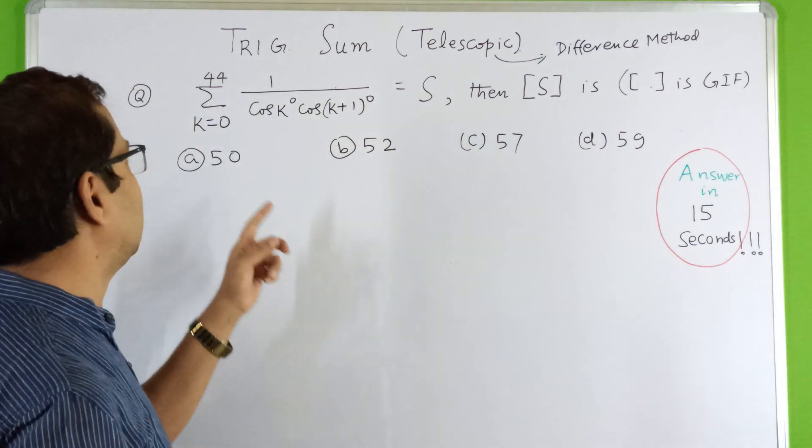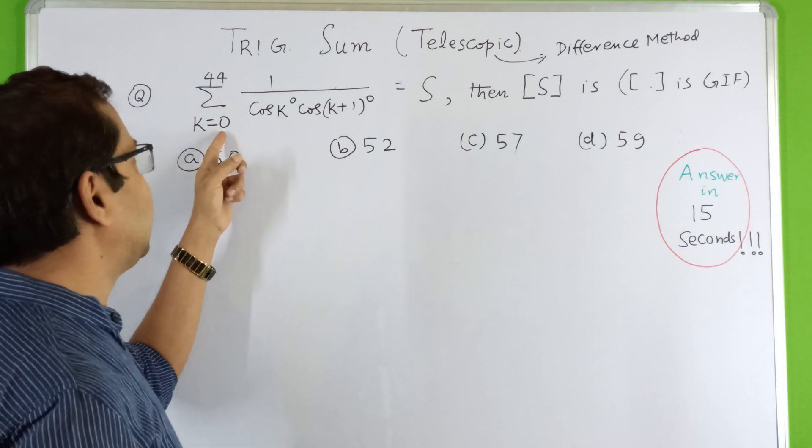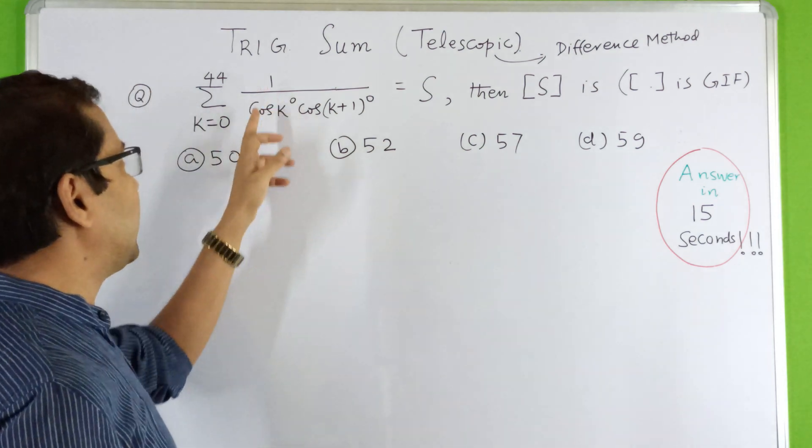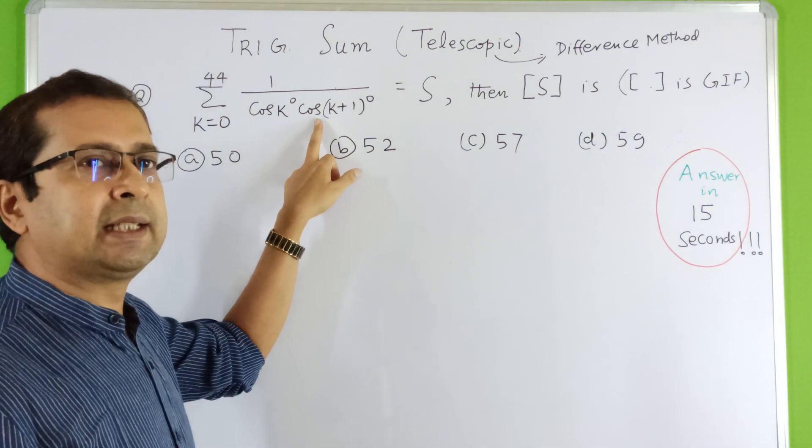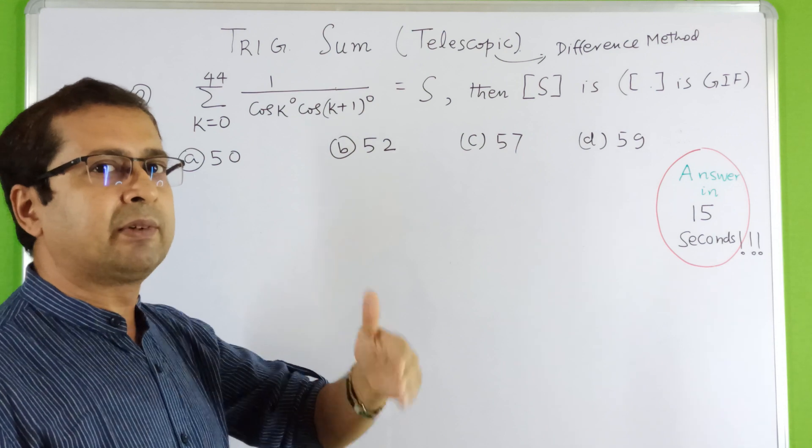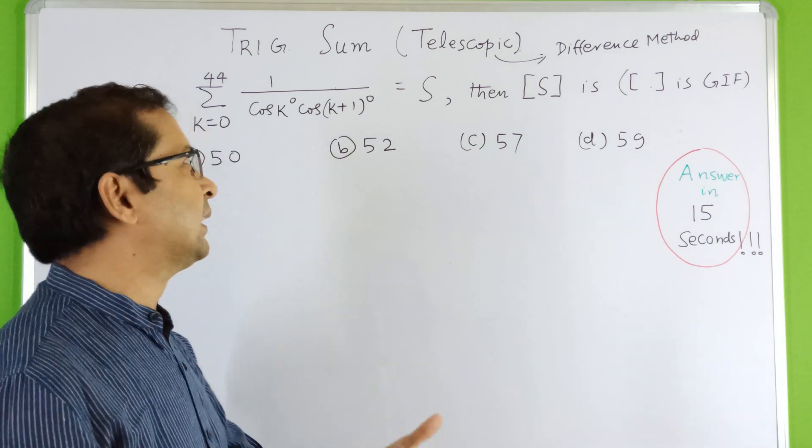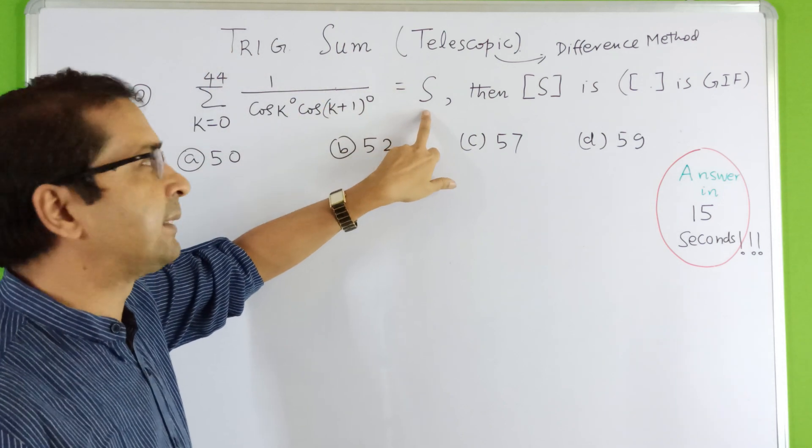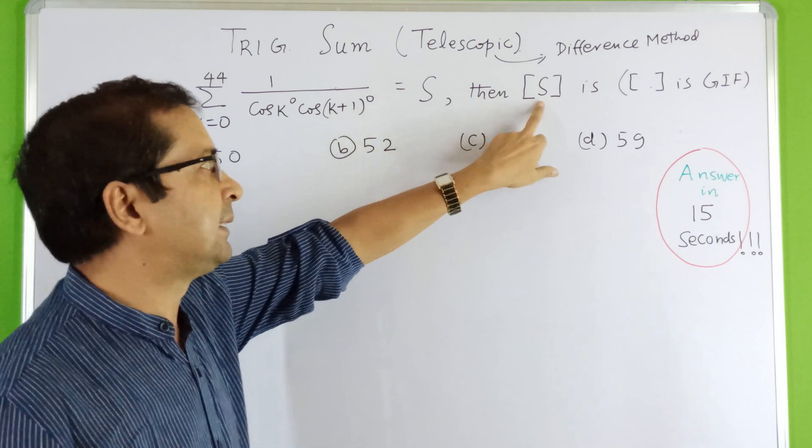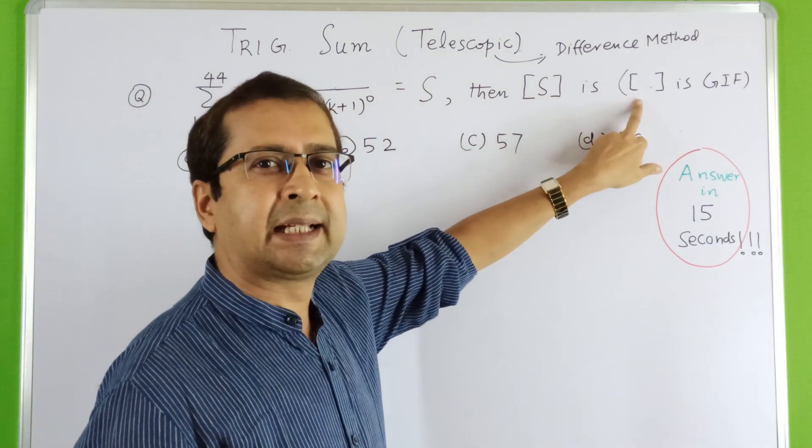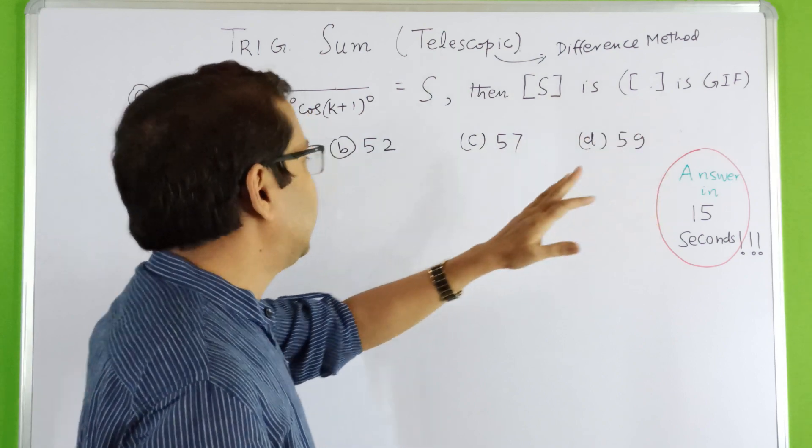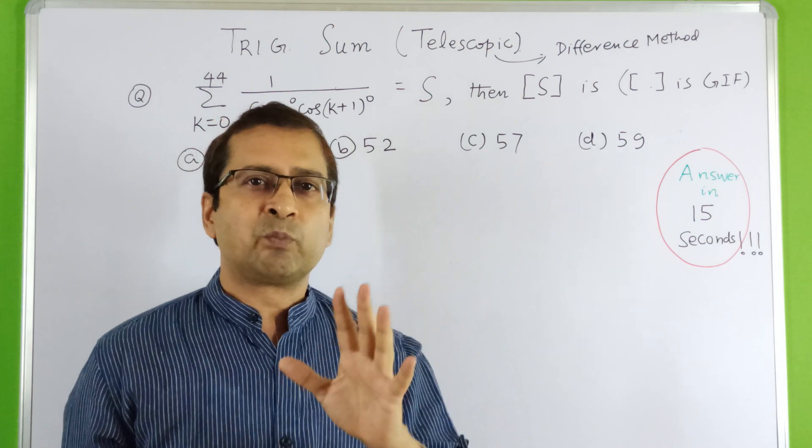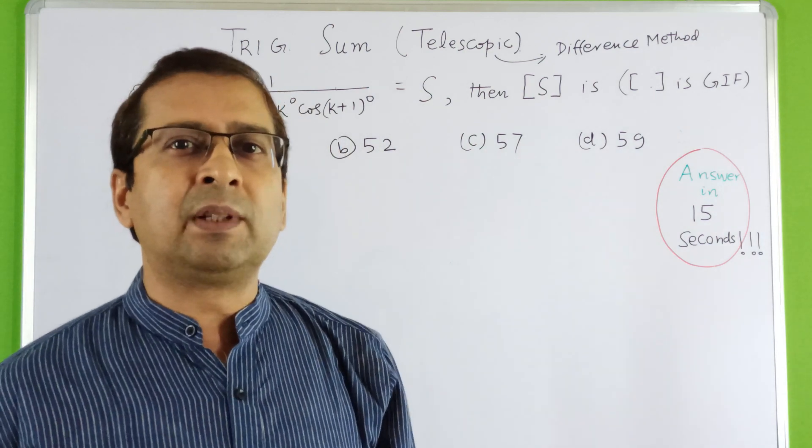So look at this problem. Sigma from K equals 0 to 44, so there are 45 terms of 1 by cos K degree cos K plus 1 degree. K is variable, Sigma varies from K equals 0 to 44 degrees, equals S.